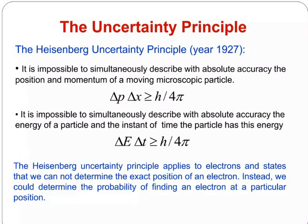Heisenberg uncertainty principle. In 1927, it was shown it is impossible to simultaneously describe with absolute accuracy the position and momentum of a moving microscopic particle: delta p times delta x is greater than or equal to h by 4 pi. It is impossible to simultaneously describe with absolute accuracy the energy of a particle and the instant of time the particle has this energy: delta E times delta t is greater than or equal to h by 4 pi. The Heisenberg uncertainty principle applies to electrons in a state that we cannot determine the exact position of an electron, so instead we could determine the probability of finding an electron at a particular position.